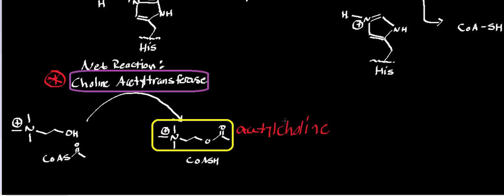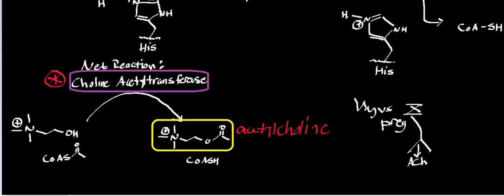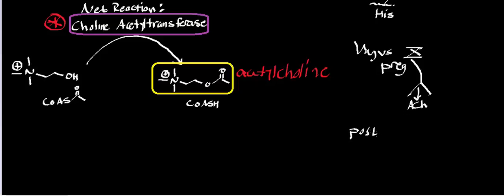Acetylcholine is released by all preganglionic neurons in both the sympathetic and parasympathetic nervous system. In the parasympathetic nervous system, it's also released by the postganglionic neuron to the target cell. For example, looking at the innervation of the sinoatrial node of the heart, the preganglionic neuron is the vagus nerve — cranial nerve number 10. That's a cholinergic neuron that releases acetylcholine, which binds to receptors on the postganglionic neuron, also cholinergic, and that leads to a slowing of the heart rate.